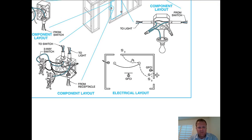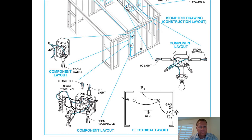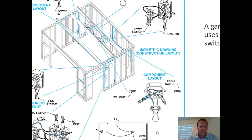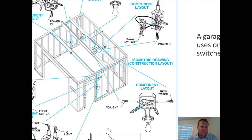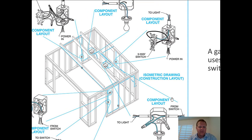In the garage example, we've got a three-way switch, a single switch, and a GFCI. I like this one because they actually show the blue wire thrown through the joist — that's more accurate to how they might really run it. Knowing all the lighting and terminations, we're good.